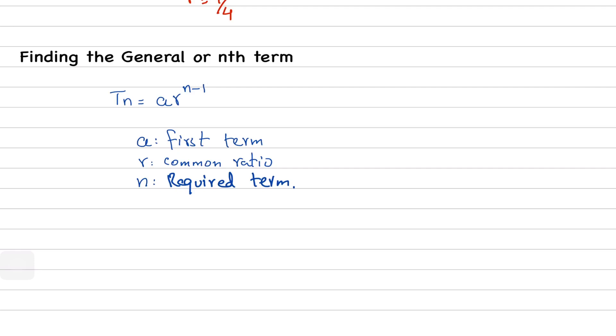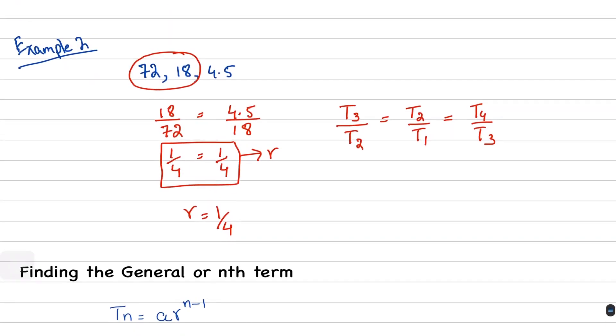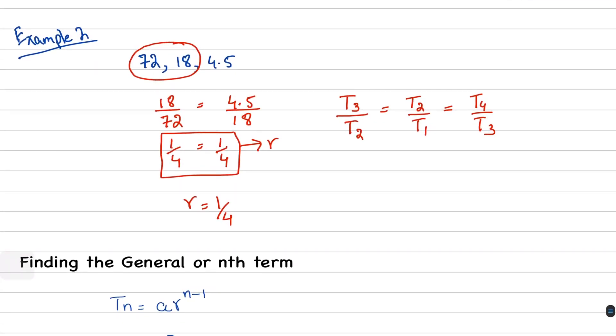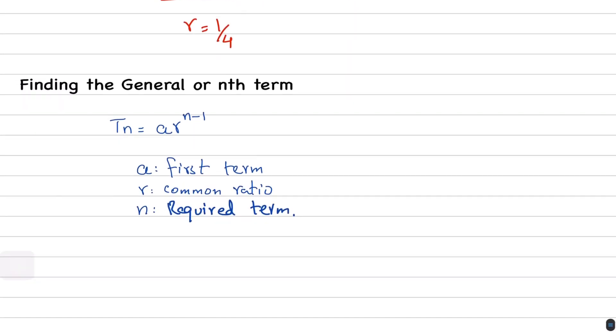Now, let's understand this with an example. Let's say we have this example: 72, 18, and 4.5. So, let's write the terms down: 72, 18, 4.5.